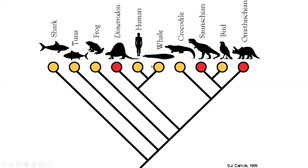So of the organisms depicted on this simple cladogram, humans are more closely related to a whale than they are to a type of dinosaur here, a Dimetrodon. You look at the connection where the two lines intersect. And if the connection is closer to the top of the diagram, then you know it's a closer relationship in terms of evolution.